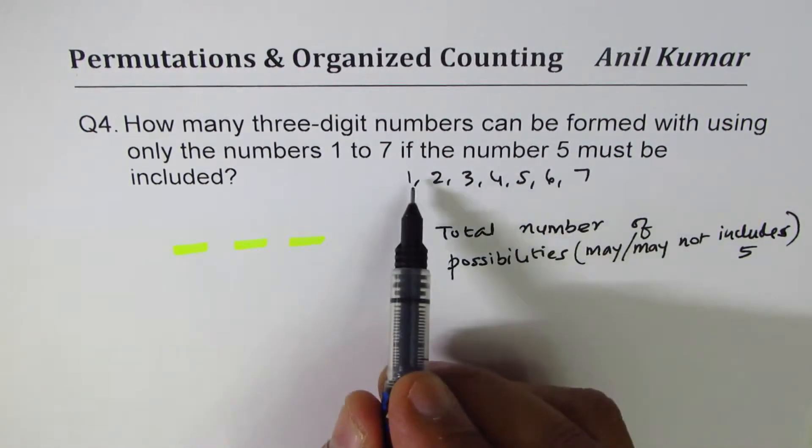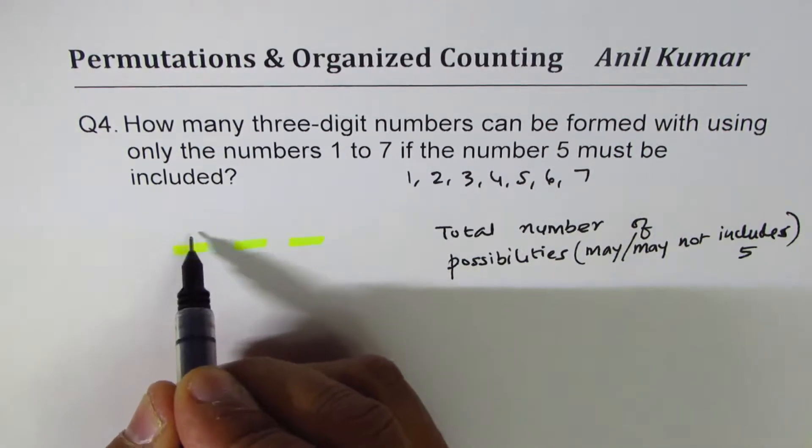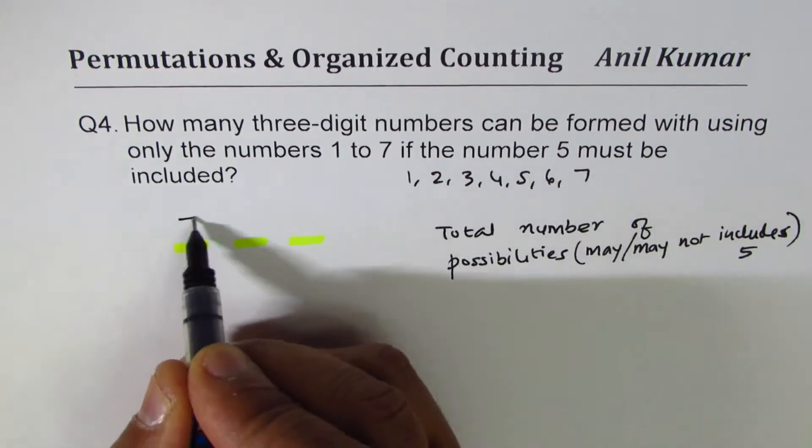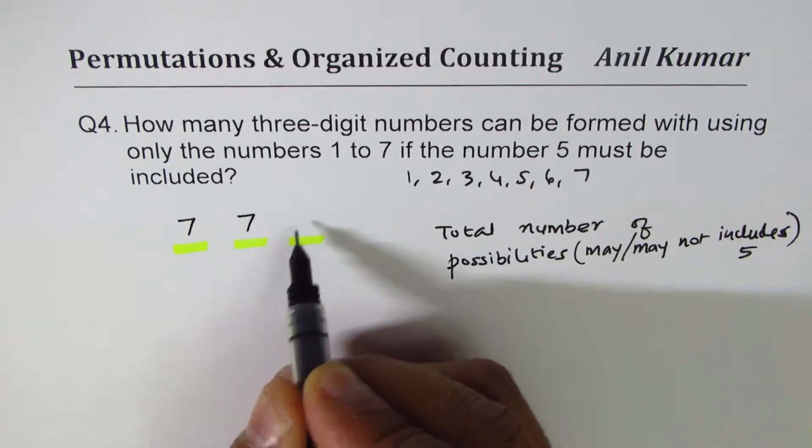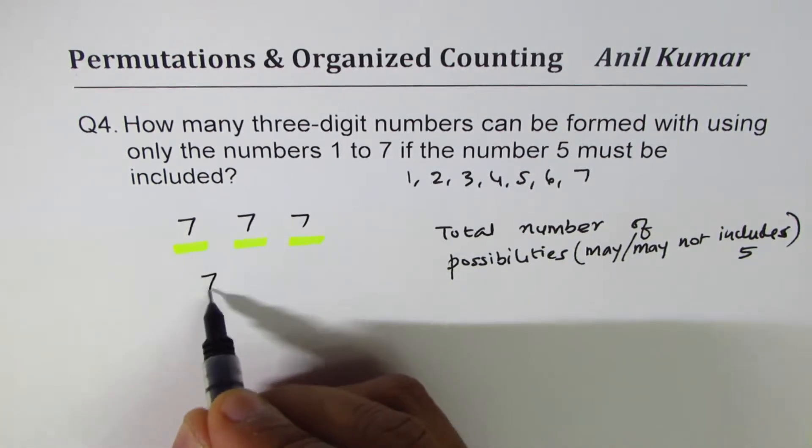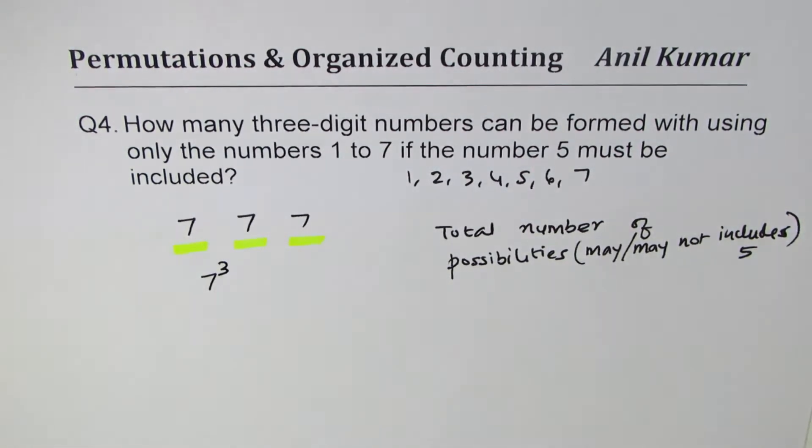Since we have seven numbers, you could fill this portion by any seven of those, tens place also, hundreds place also. You get 7³ as your answer. Now let us consider case two, so this becomes case one.